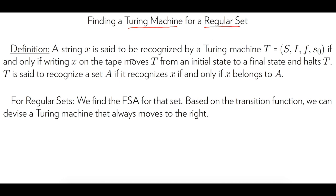By definition, what does it mean for a Turing machine to recognize a regular set? A string S is said to be recognized by a Turing machine T — given by a set of states, input set, a partial transition function, and an initial state — if and only if writing S on the tape moves T from an initial state to a final state and then halts. T is said to recognize a set A if it recognizes X if and only if X belongs to A. This means all strings in the language make T halt, and none of the other strings make it halt.